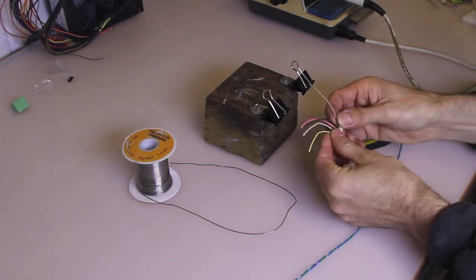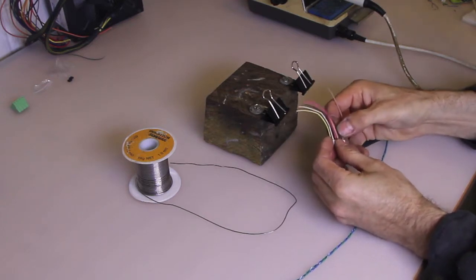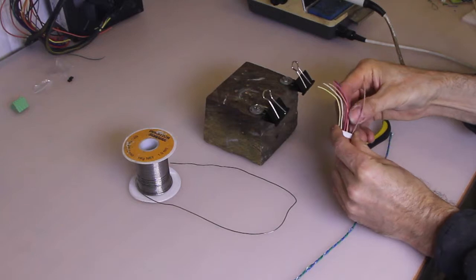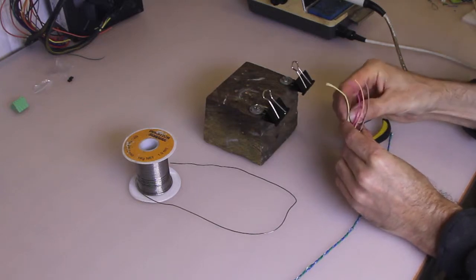So we're just going to chop off the wires that we don't need. As we just measured with a multimeter, we don't need this black wire and this white wire, so they're going to get cut off.